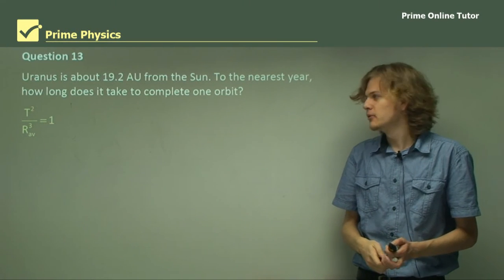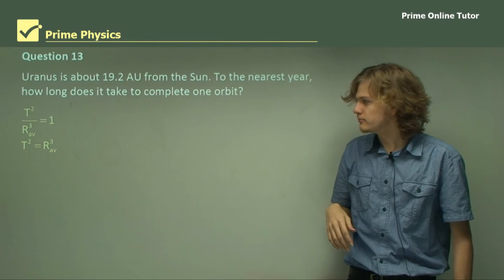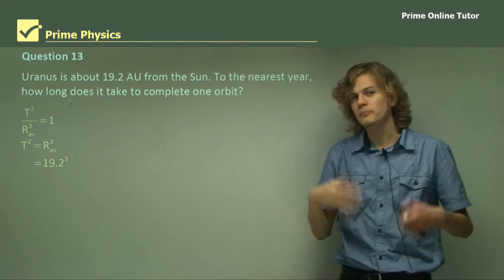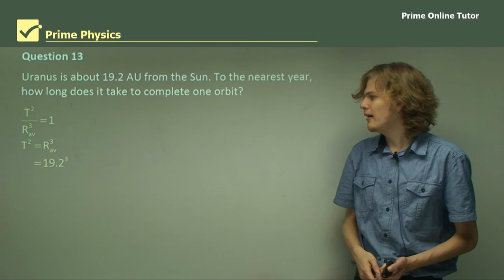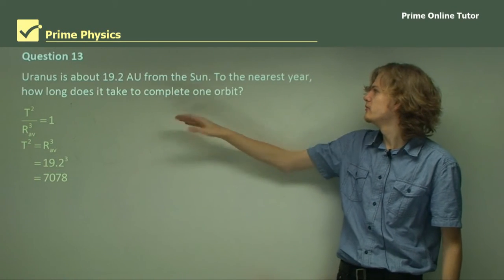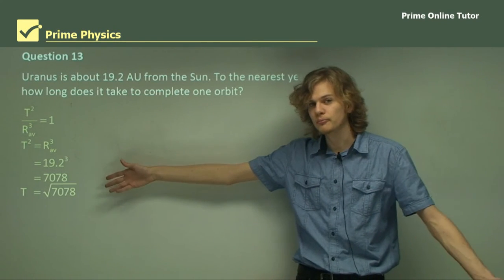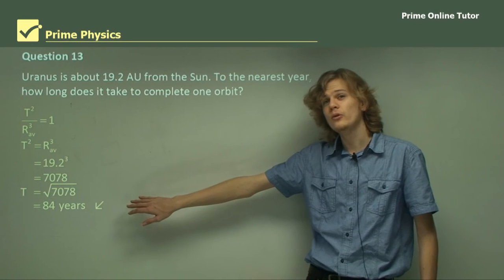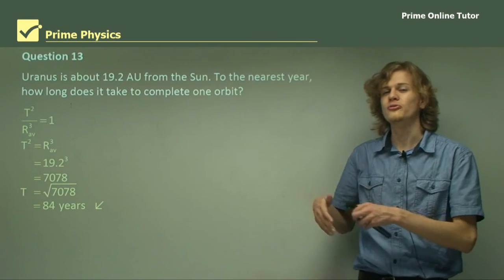We're looking for the period, so we can rearrange the equation: period squared equals radius cubed, assuming they're using the right units. If we substitute in the 19.2, we end up with the period squared is 19.2 cubed. That evaluates to about 7,078. We only need it to the nearest year. The period is simply the square root of 7,078. Sticking that into a calculator gives us about 84 years. A Uranian year is a lot longer than an Earth year. The further out you go, the longer the years get.